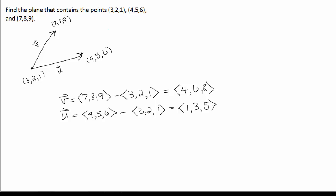If we want to get a vector perpendicular to those two vectors, we need to cross them. So if we do (4, 6, 8) crossed with (1, 3, 5), then we're looking at the determinant with rows I, J, K then 4, 6, 8 then 1, 3, 5.